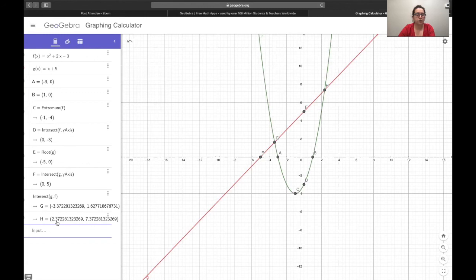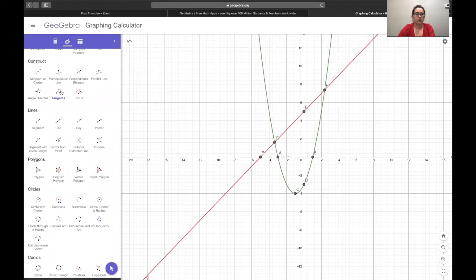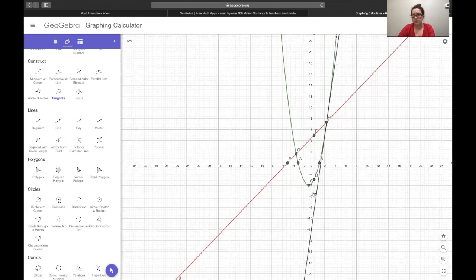So plenty of uses. They can use it for geometric concepts. You can use it for calculus so we can find the tangent line. Say we want to find the tangent line at point h on the parabola and it draws this line right here. Then say I want to know the slope of that line, I can just go to slope, select the line and the slope is 6.74. So lots of different uses for this and students will get familiar using it in class.